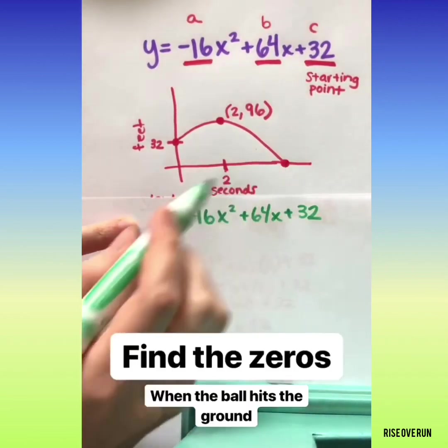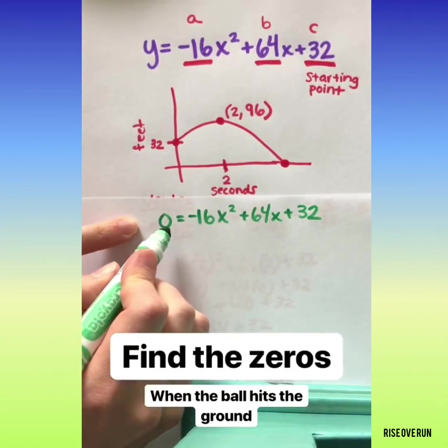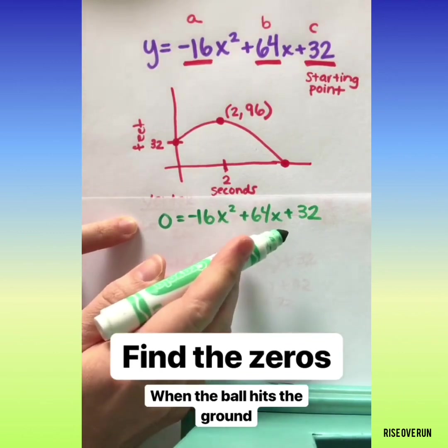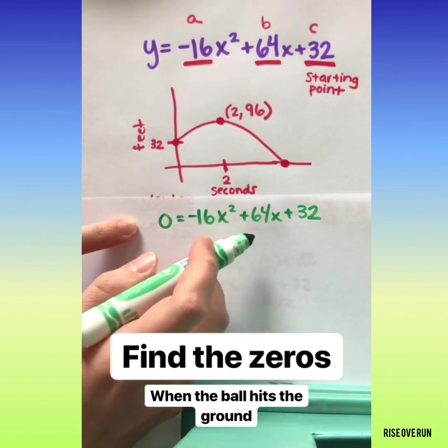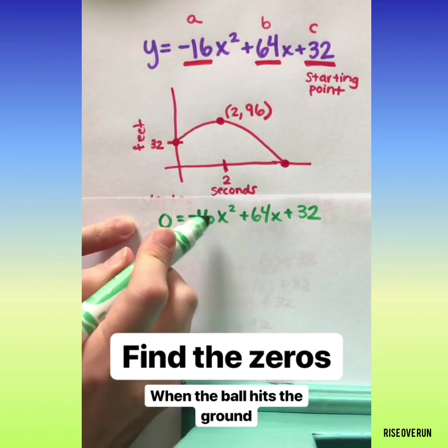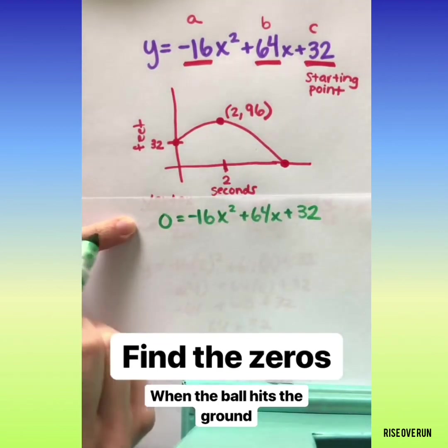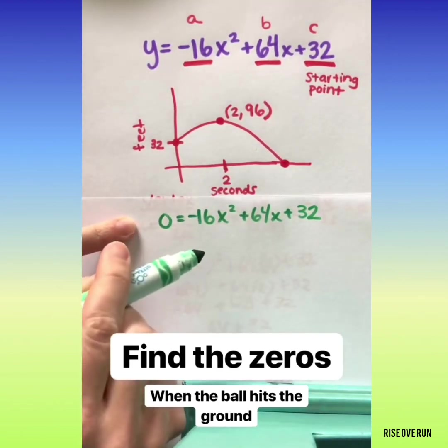Okay, I'm trying to find the zero, so I plugged in a 0 for y, and now I can solve. I have a few options. I could use the quadratic formula. That'll work right now. I can plug in a, b, and c. But let's try to factor this a little and see what happens.